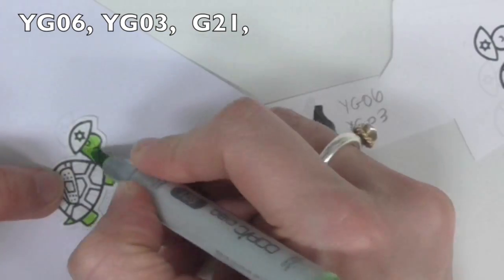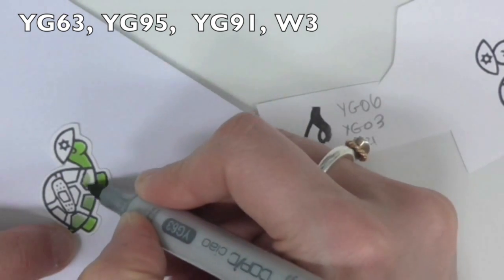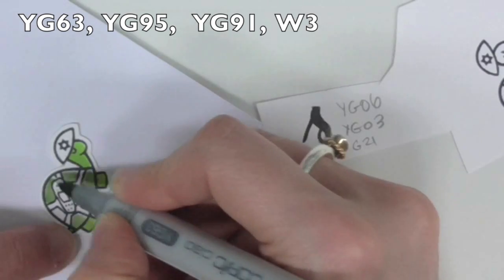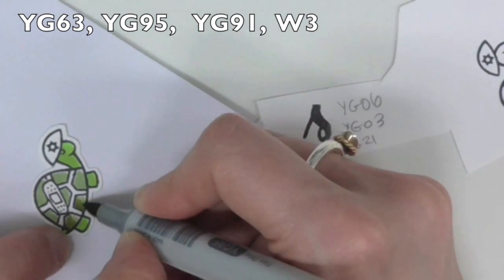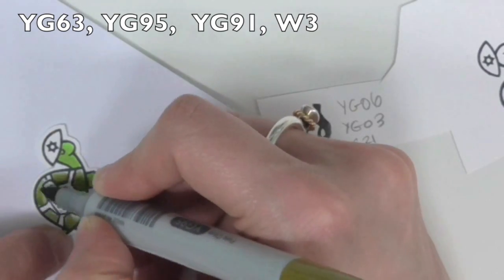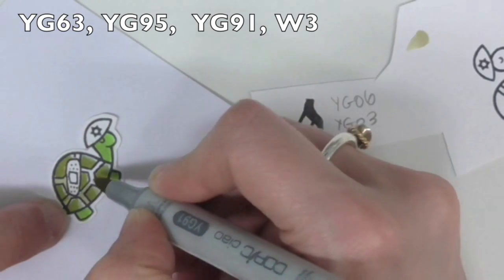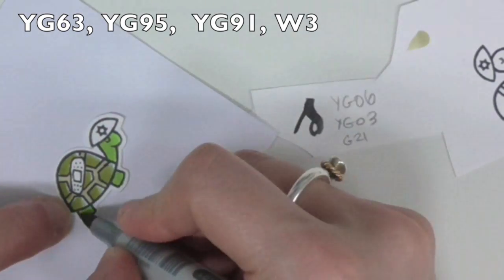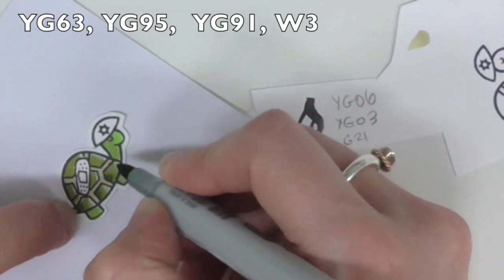So now a little Copic coloring. I've got the colors mentioned at the top. He is really tiny so he doesn't really need this much work, but I'm using my YGs to bring in some green tones, coloring in his little shell as well, and I'm adding a little bit of the W3 just to tone some of it down. It was a little bit too bright for what I wanted.